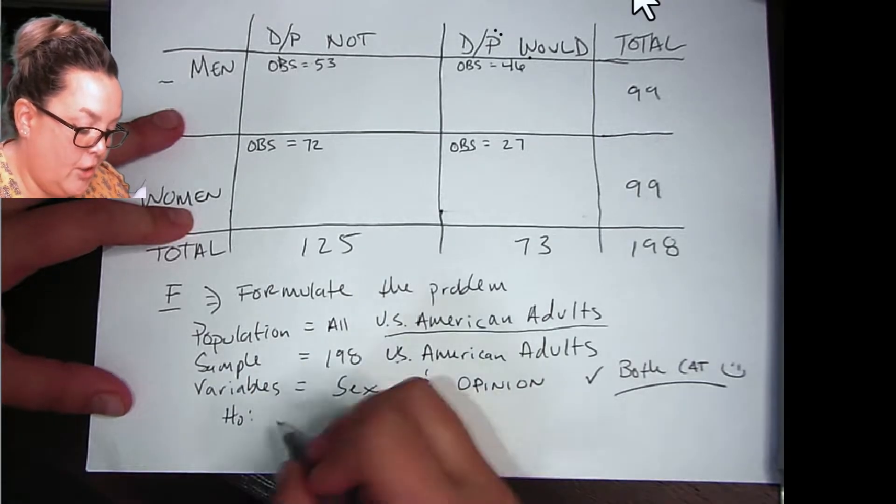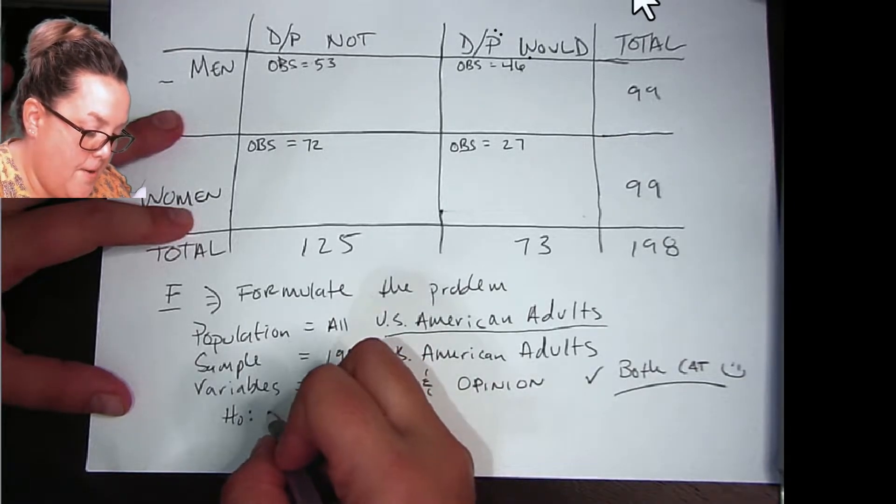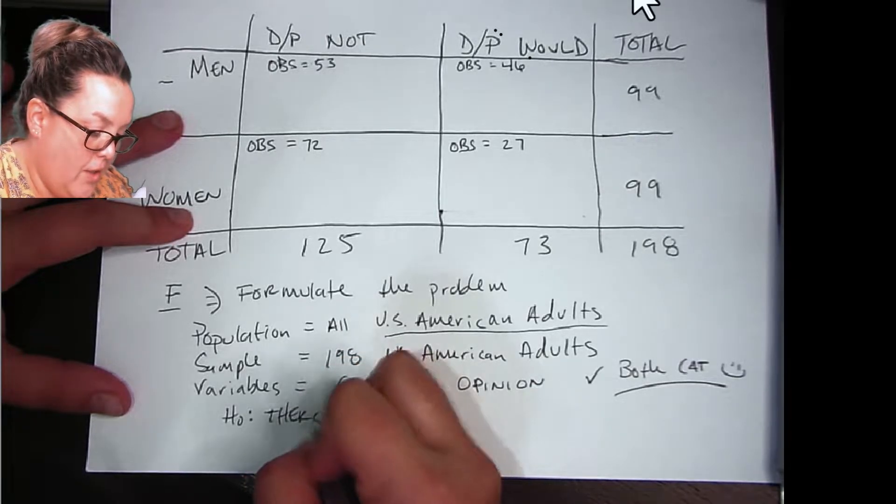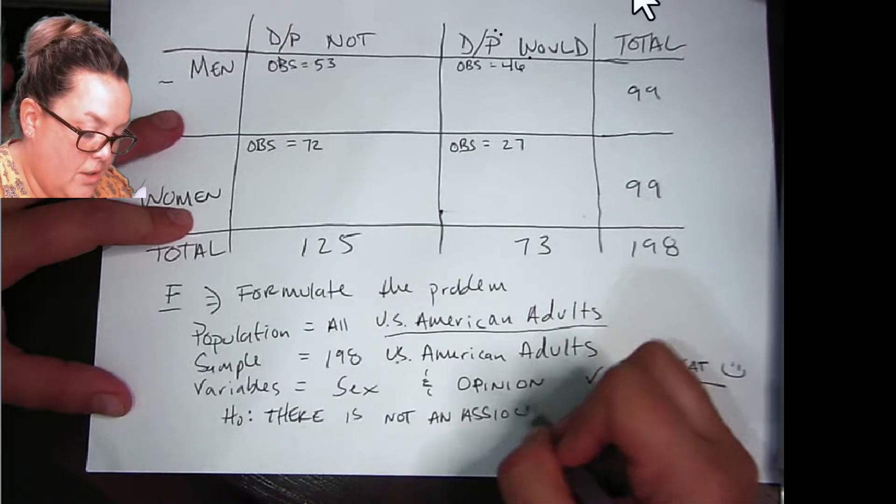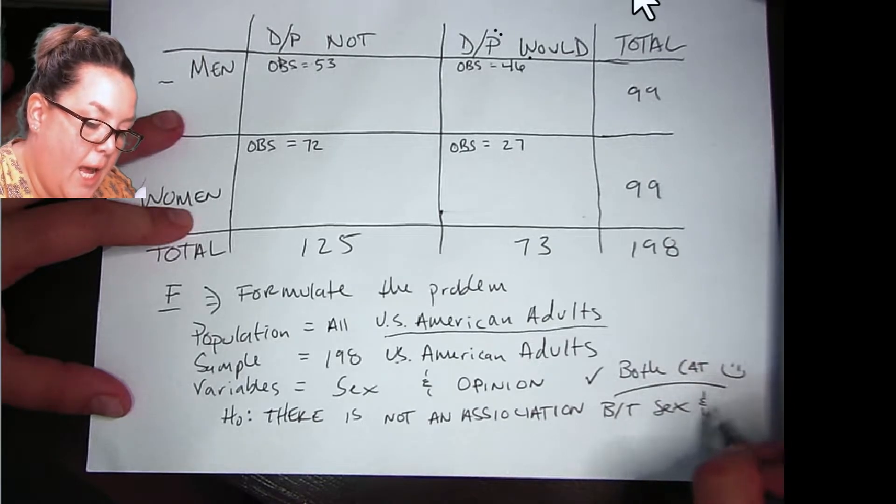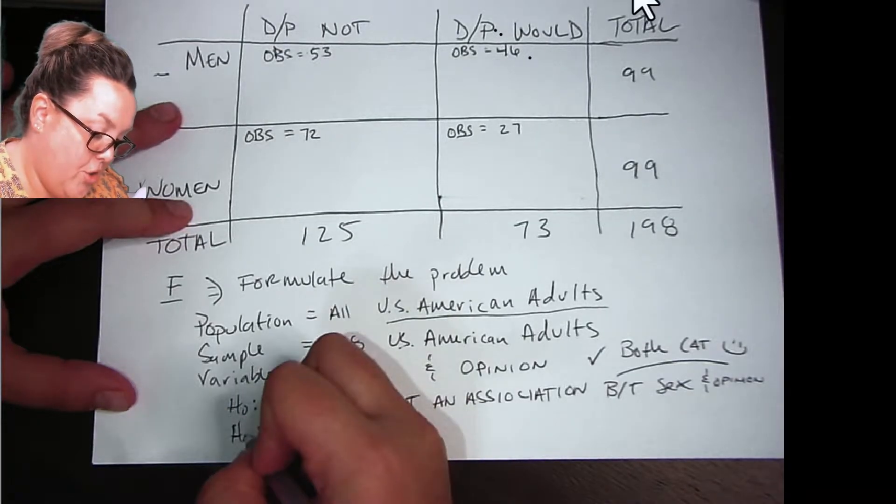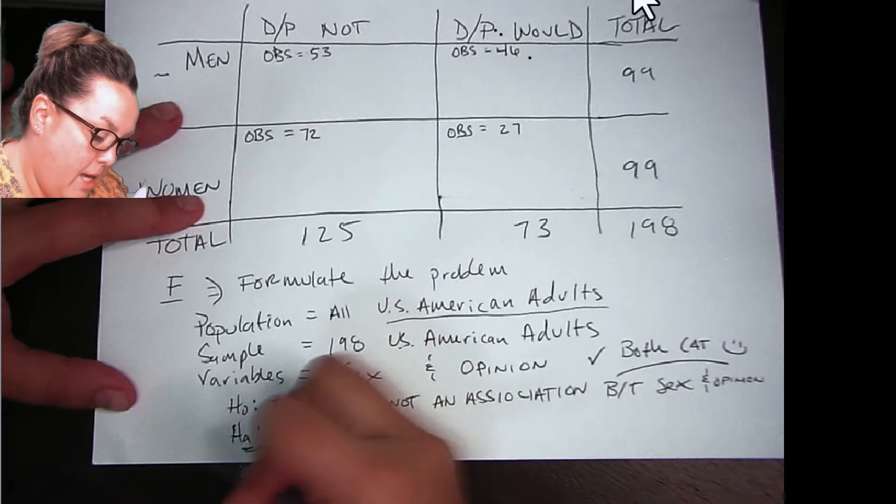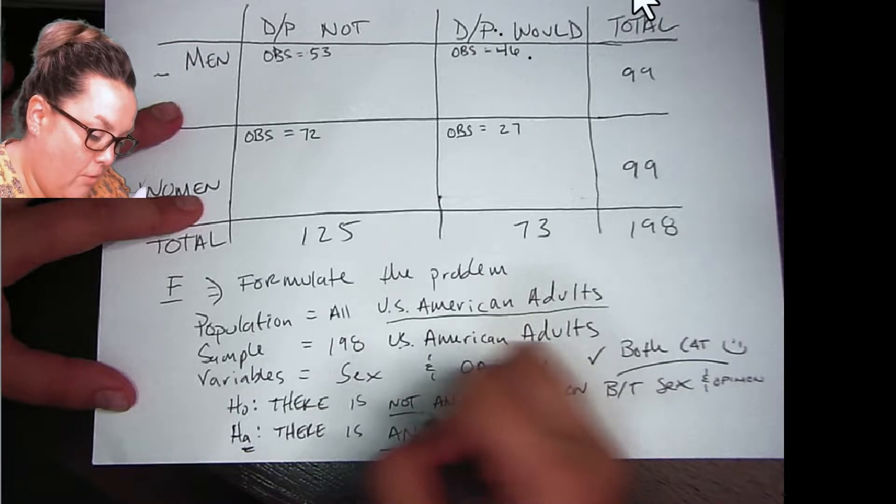And then we need to state our hypotheses. So remember the null is no, so there's no relationship or they're not associated. So I would say there is not an association between sex and I'm just going to shorten it to opinion for the sake of the video and writing and the page. But normally you really should be very specific as to what the whole variable is. So then remember H sub A, there is a relationship or there is an association. So that's how we remember those.